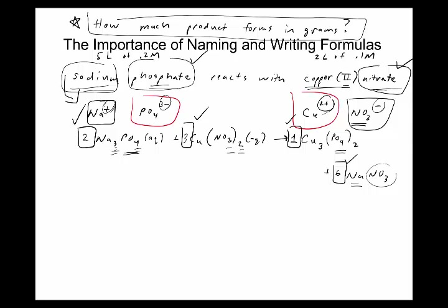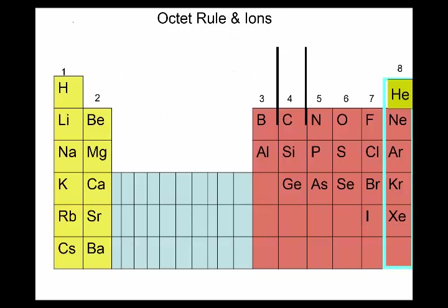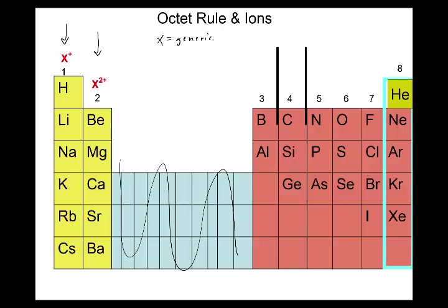To get there we need to cover how to name compounds. On your periodic table, mark the main group elements — the S and P columns, which excludes transition metals. Above each column write the charges: column 1 makes 1+, column 2 makes 2+. X is generic for any element in that column or family — so all of column 2A makes a 2+ charge when forming ions.